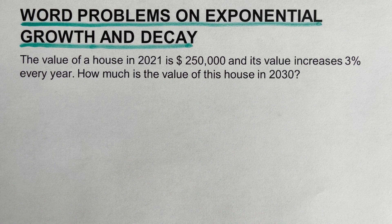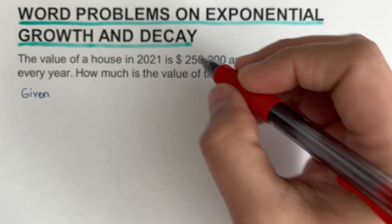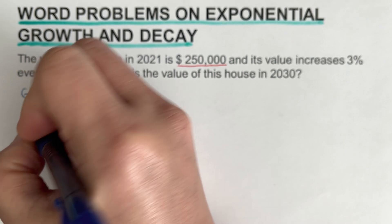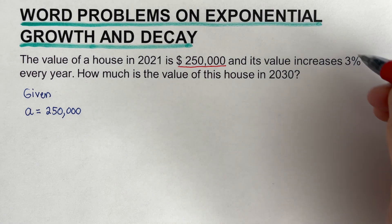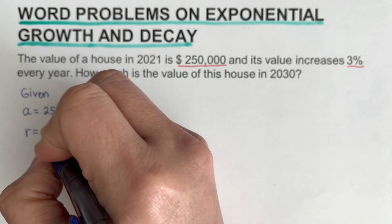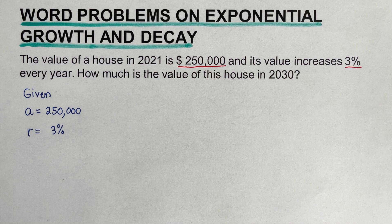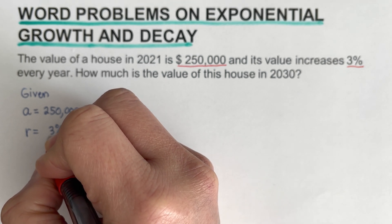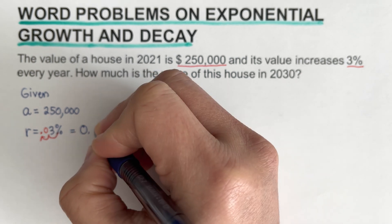We determine what are the given values in this problem. The first given is $250,000 — this is the initial value, so a equals 250,000. We also have 3%, which refers to the growth rate. So r is 3%. We remember that r should be expressed in decimal by moving the decimal point two places to the left, so r equals 0.03.